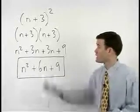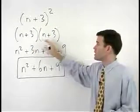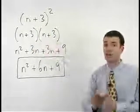Remember, whenever you square a binomial you must write it out as that binomial times itself, then FOIL.